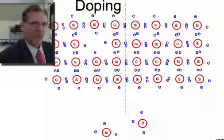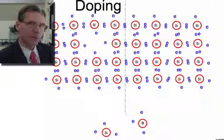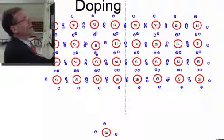Now, boron has only got three electrons in its outermost shell. Remember, it's got one less proton as well. So it's still electrically neutral. We're going to insert that into our lattice and see what happens.